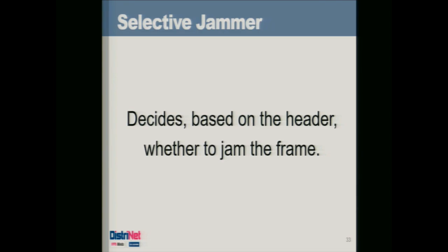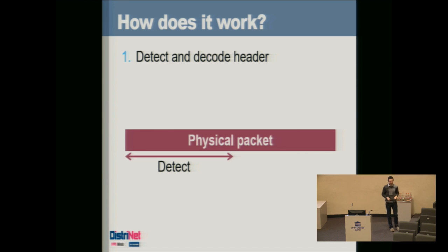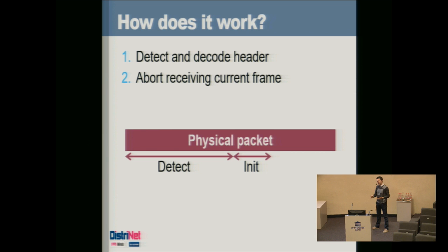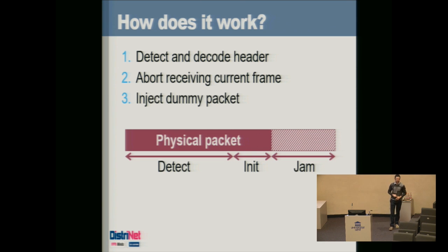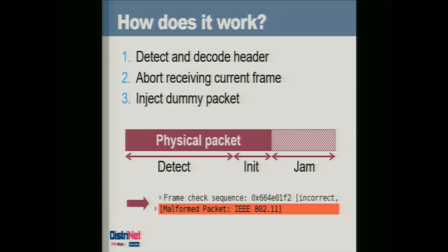Now we're going to implement the selective jammer. A selective jammer blocks specific packets — only those from or to a certain device, rather than jamming the complete channel. The steps are: detect a new incoming transmission, decode the header of the packet, then initialize the jammer by stopping reception and putting the antenna into transmit mode, and inject a dummy packet to jam the remaining content. Even though only the last bytes are jammed, because of the CRC checksum over the complete packet, the receiver will detect the invalid CRC and drop the entire packet.